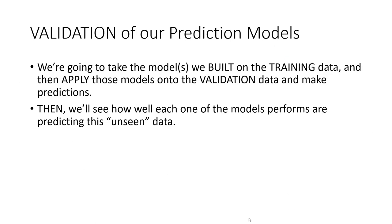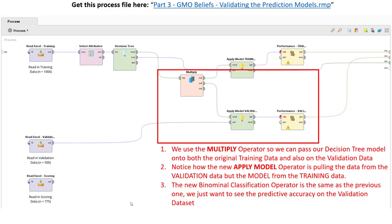That zero percent accuracy in the validation process tells us our model isn't any good. We need to apply this logic to our GMO prediction model. Now it's time to validate our prediction models — we're going to take those 14 models built during the training phase and apply them to predicting the validation data set. Remember, the validation data set represents 500 records the model was not shown while actually building itself. In RapidMiner, we use an Apply Model operator and the Binomial Classification Performance operator, taking the model from the training data set but applying it to the validation data set.